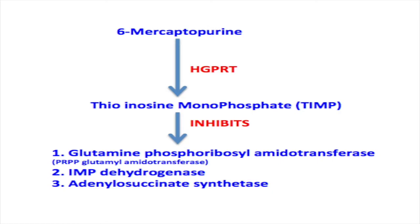Apart from glutamine phosphoribosyltransferase, TIMP — the active drug — also inhibits two more enzymes in purine nucleotide biosynthesis: IMP dehydrogenase and adenylosuccinate synthetase. So in total, three enzymes are inhibited by the active molecule derived from 6-mercaptopurine, catalyzed by hypoxanthine guanine phosphoribosyltransferase.